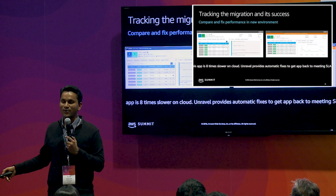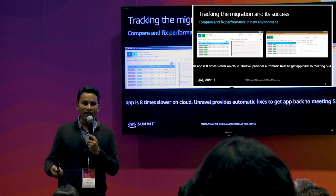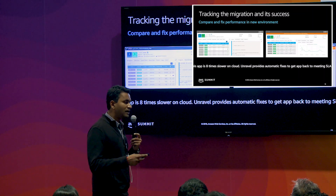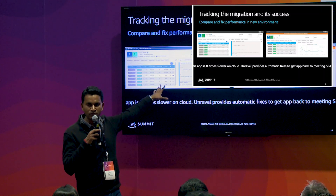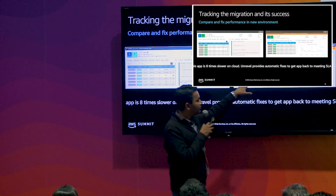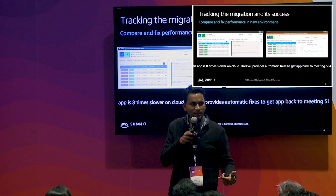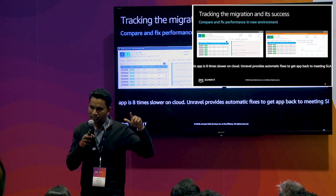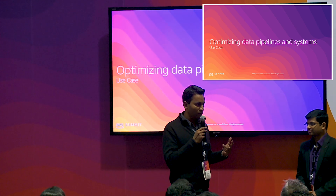Now that migration is underway — usually a multi-month exercise — how do you guarantee and tell your business constituents that a migration actually happened successfully? Unravel becomes a project management tool, showing that a Spark app running in about two minutes on the old environment now takes 35 minutes in the new one. Unravel's optimization features kick in to optimize the application back under that two-minute SLA, and then you can check it off as successfully migrated. With that, I'll hand it over to Shivnath to talk about how we optimize workloads once in the cloud.